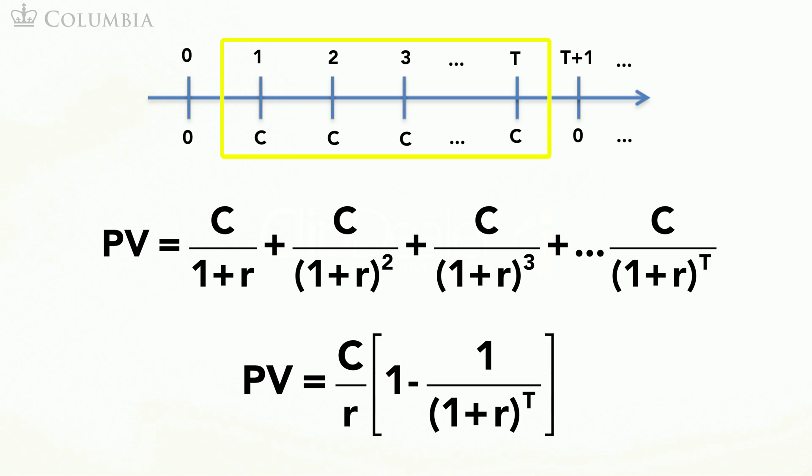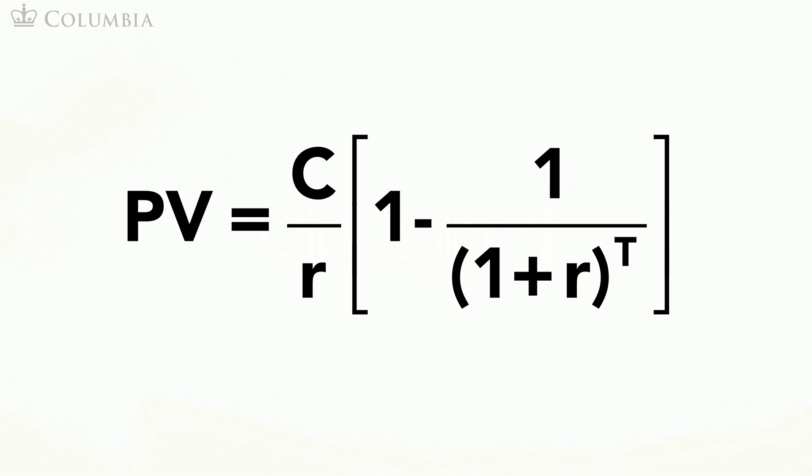Alternatively, you can use the annuity formula. In the formula, C is the cash flow you receive, R is the discount rate, and T is the number of periods over which you receive the cash flow.